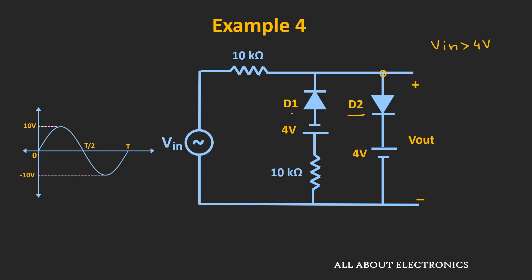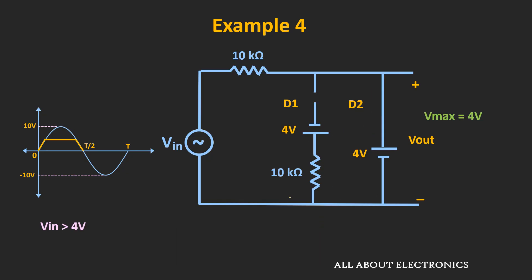Similarly, this diode D2 will conduct whenever the voltage at the cathode is less than minus 4V — in other words, whenever the input voltage Vin is less than minus 4V. So these are the conditions for conducting diode D1 and D2. During the positive half cycle, whenever the input voltage is greater than 4V, this diode D2 will conduct and diode D1 will get reverse biased — it will act as an open circuit. So during the positive half cycle, whenever the input is greater than 4V, the output appearing across these two terminals will be equal to 4V.